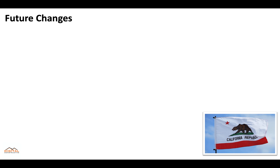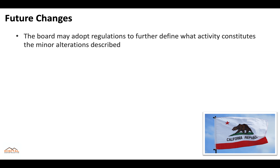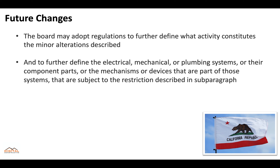It's important to remember that this is just the beginning. The board may adopt regulations to further define what activities constitute the minor alterations described, and to further define the electrical, mechanical, or plumbing systems or their component parts. This basically means the CSLB could potentially make changes to this license in the future.